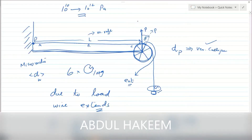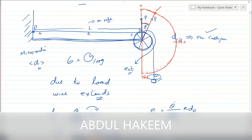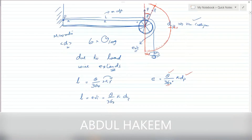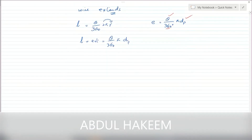By placing a protractor here — with the center of the protractor exactly at the middle of the pulley — we mark the angle theta. This is the zero line, 90 degrees, and 180 degrees. Using theta, the formula extension equals theta over 360 times diameter of pulley, and we can calculate the extension. We keep loading the wire with masses, and by measuring the angle each time we get extension 1, extension 2, extension 3, and so on.